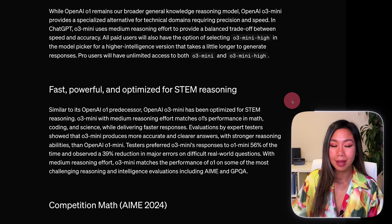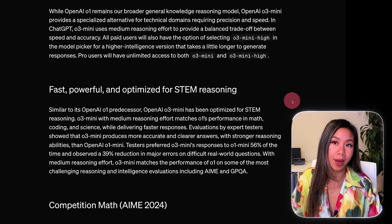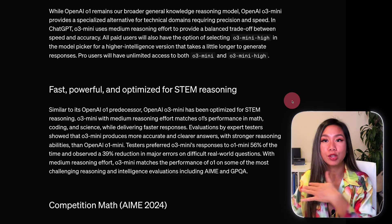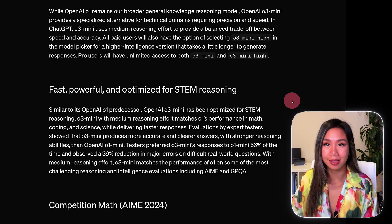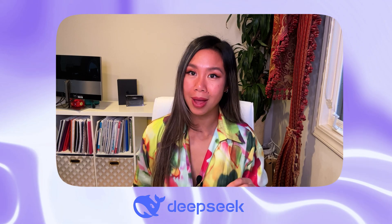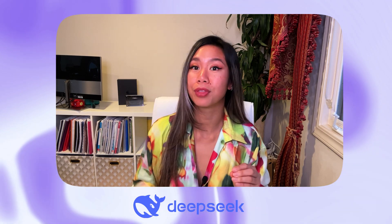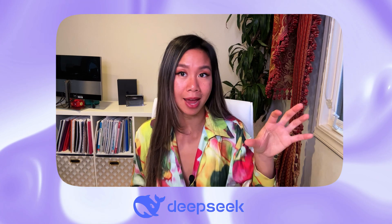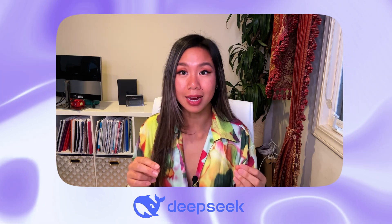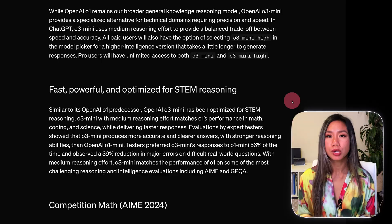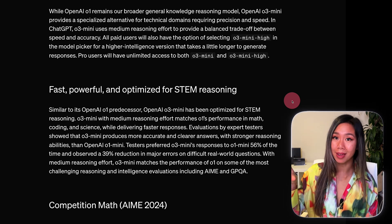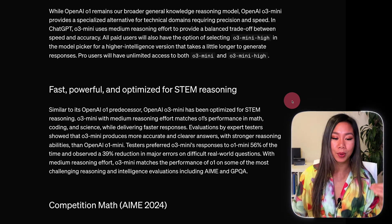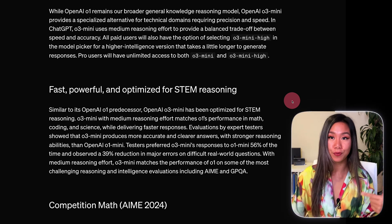O3, like O1, specializes in reasoning for STEM topics, which is fine to specialize in. But DeepSeek R1 has reasoning capabilities for both STEM topics and general purpose tasks, so its reasoning capabilities extend to everything. I wonder if O3 got better at one thing while getting worse at another. In any case, we'll check out the benchmarks for the STEM fields.